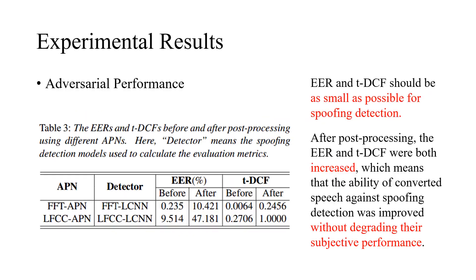The adversarial performance is shown in Table 3. EER and t-DCF were adopted as metrics, which should be as small as possible for spoofing detection. After post-processing, the EER and t-DCF were both increased, which means the ability of converted speech to evade spoofing detection was improved without degrading subjective performance.